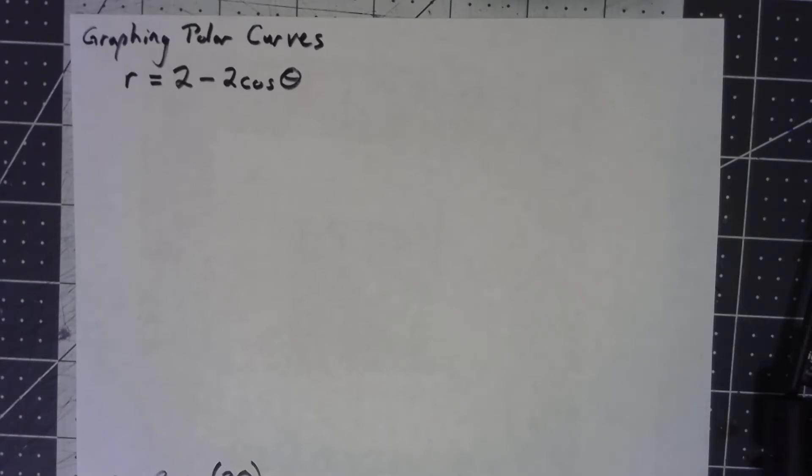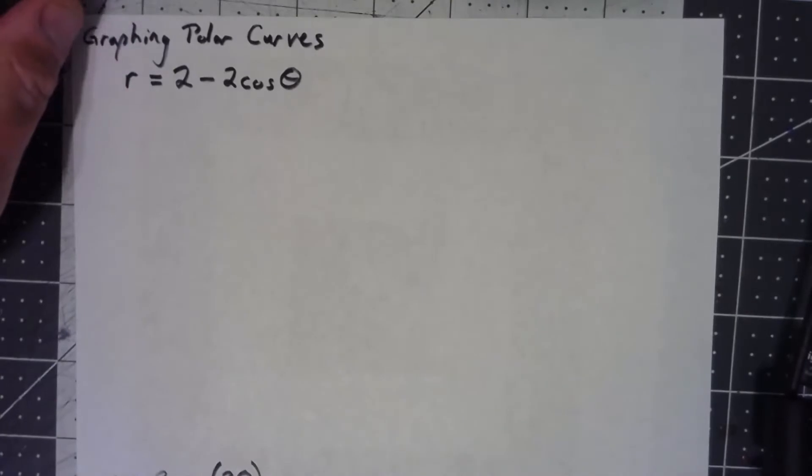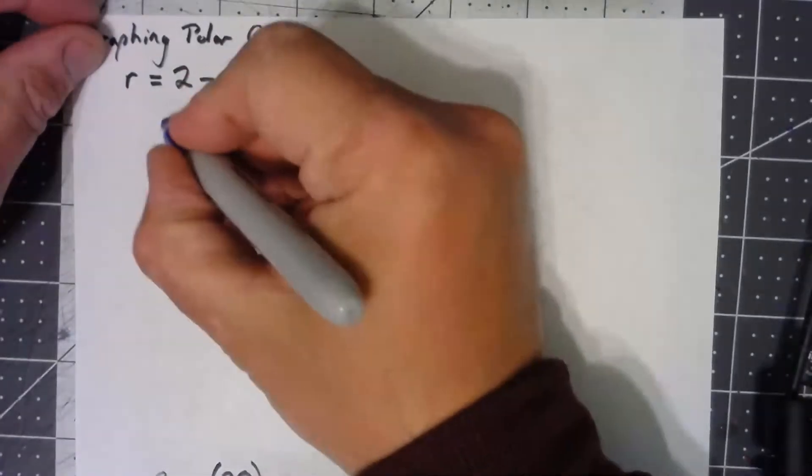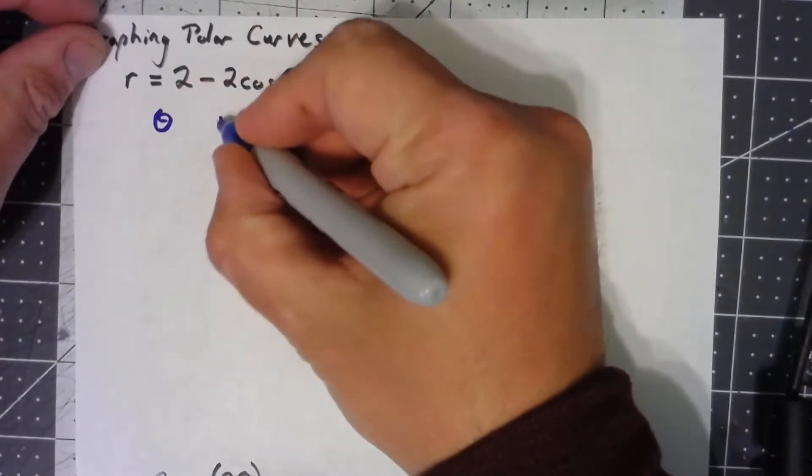The simplest way to graph a polar curve is kind of like when you are first learning how to graph a function in early algebra. In fact, we just did it recently in terms of parametric. We can just go ahead and find a bunch of points, plot those points, and connect the dots. So here what we're saying is that if we plug in a theta, we get an r.